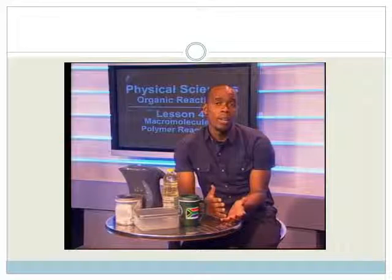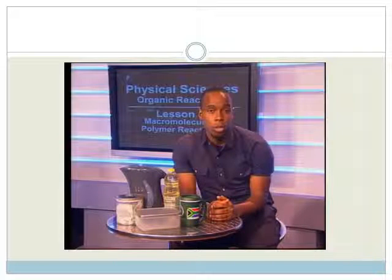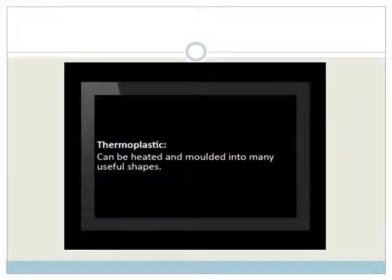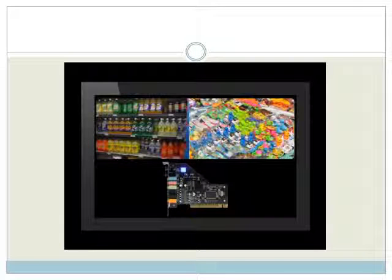Polyethene, or polyethylene, as it is sometimes called, is a very useful polymer. It is a thermoplastic. This means that it can be heated and molded into many useful shapes. Polyethylene is a widely used plastic and is found in plastic bottles, toys, and parts of computers.